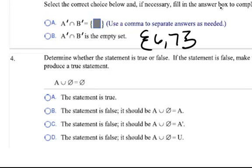For number four, we need to determine if A union the empty set equals the empty set. Union means all the elements from both sets. So A union the empty set is actually going to be A. So the correct answer is B.